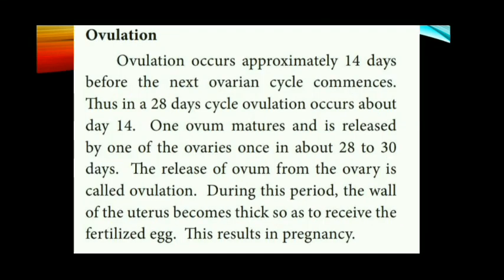Ovulation: At the onset of puberty, every month an ovum gets matured in either of the ovaries of females and is released into the fallopian tube. The release of ovum occurs approximately 14 days before the next ovary cycle commences. Thus, in a 28-day cycle, ovulation occurs around day 14. One ovum is released by one of the ovaries once in about 28-30 days. During this period, the wall of the uterus becomes thick so as to receive the fertilized egg.